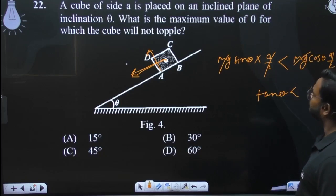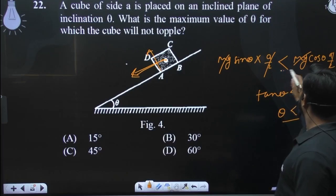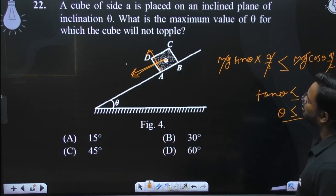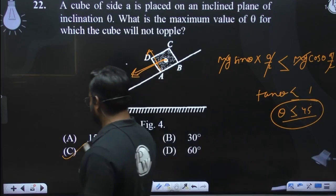1. Any theta less than 45. What is the maximum angle? Theta ka maximum angle kya ho taki ye topple na kare? To 45 degree hai. Baat samajh mein rahi hai?